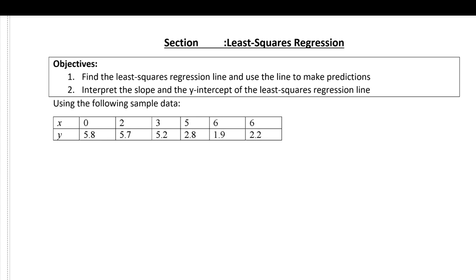Let's start with an example using this sample data. We have both x and y values, which are considered ordered pairs. If you were to create a scatter plot of these points, a least squares regression line is the line that best fits that scatter plot.